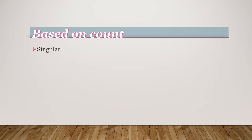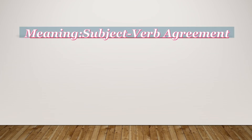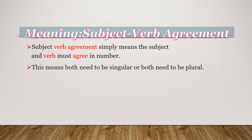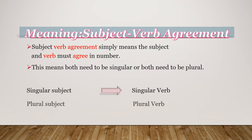On the basis of counting, subjects can be singular or plural. Now, what is the meaning of subject-verb agreement? For a sentence to be grammatically correct, it needs to satisfy some rules. Subject-verb agreement simply means that the subject and verb must agree in number. This means that either both need to be singular or both need to be plural. That is, a singular subject must have a singular verb and a plural subject must have a plural verb. This is the most basic rule of subject-verb agreement.